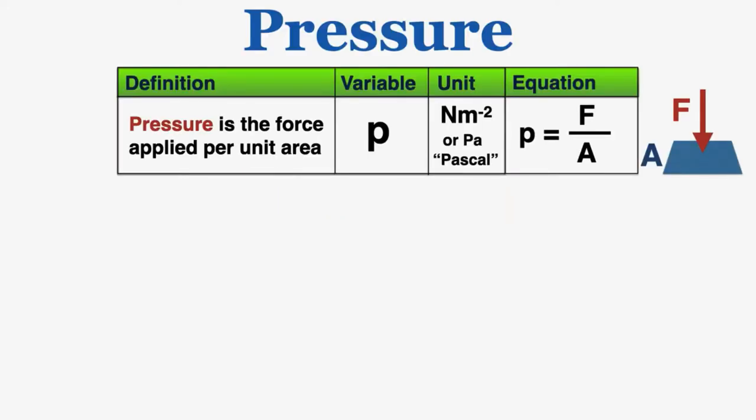This lecture is about the idea of pressure in physics. Pressure is the force applied per unit area on a surface. The variable is lowercase p, and the unit is Newton per meter squared, or Pa, which is short for Pascal, who is a famous mathematician and philosopher who worked a lot with the idea of pressure. The equation for pressure is just force over the area that it's applying on.